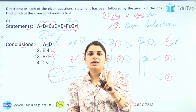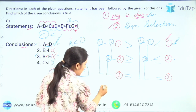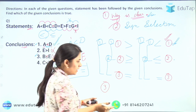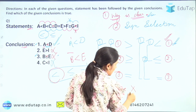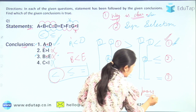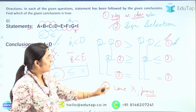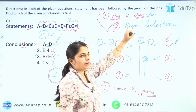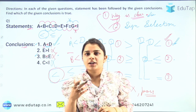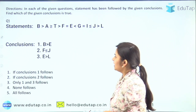तो दो steps में आपको basic वाले questions करने हैं। Third step mainly either or में apply होता है — जब दोनों ही conclusions गलत हो जाएं तो possibility check करनी होती है। वो either or में होगा जो हम next class में पढ़ेंगे। पर basic में आपको यह दो steps apply करने हैं: way is clear, और फिर sign select करो। दोनों steps perform करेंगे इस question में।